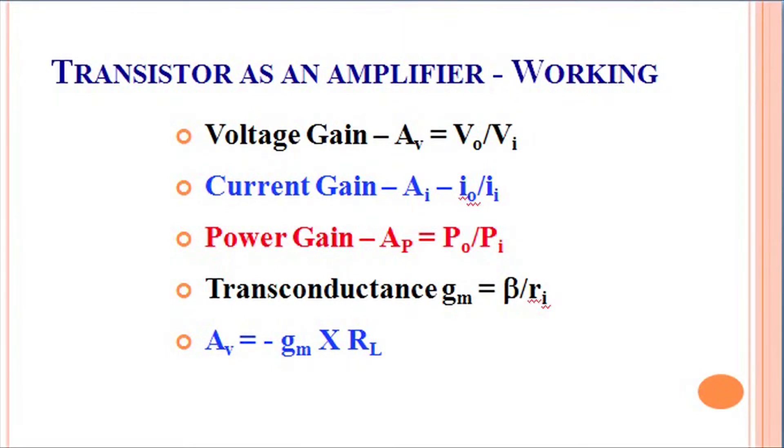So AV represents the amount of voltage gain, AI represents the amount of current gain and corresponding to this we have the power gain which is output power divided by the input power.